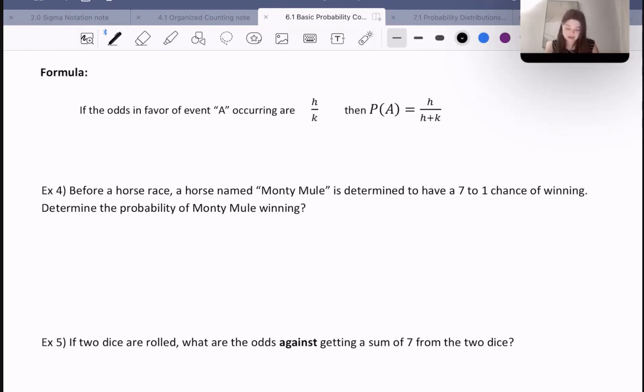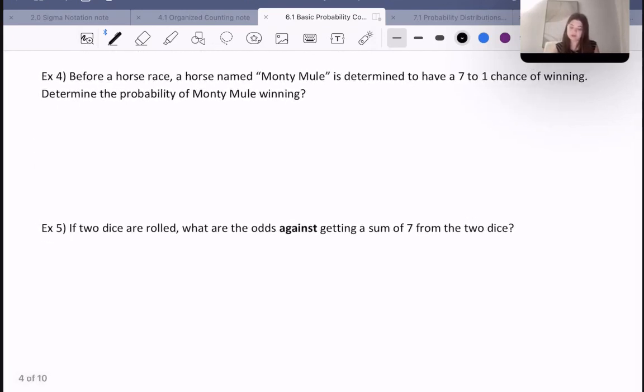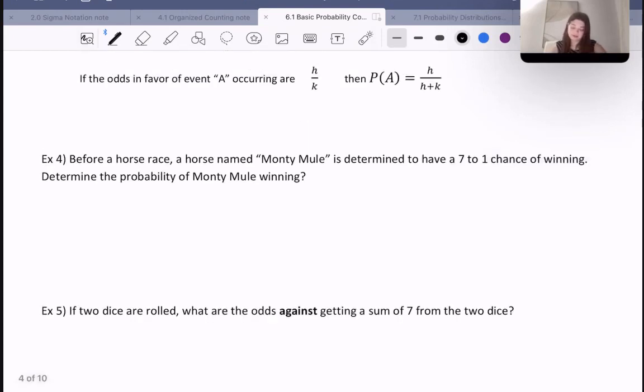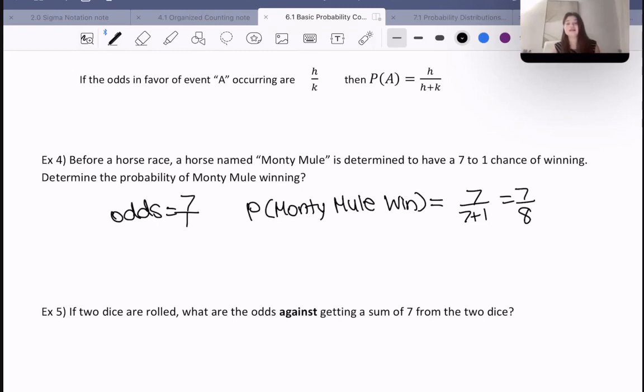Example four: Before a horse race, a horse named Monty Mule is determined to have a seven to one chance of winning. Determine the probability of Monty Mule winning. We have H over K, which is 7 over 1 as our odds. So the probability would be 7 over 7 plus 1, which is 7 over 8. So a pretty good chance. Seven times out of eight he wins, only one time does he not win.